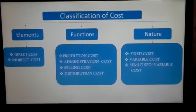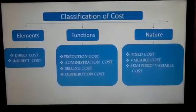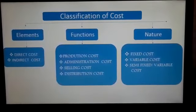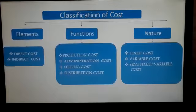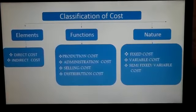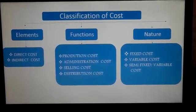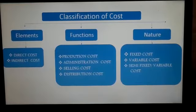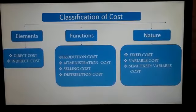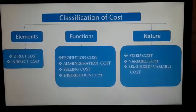These are the bases on which cost can be classified. The first one is basis of element. Based on element, cost is classified into material, labor, and expenses. Again, they are subdivided into direct and indirect cost. All the direct expenses are termed as prime cost, and indirect expenses are totally called as overheads.